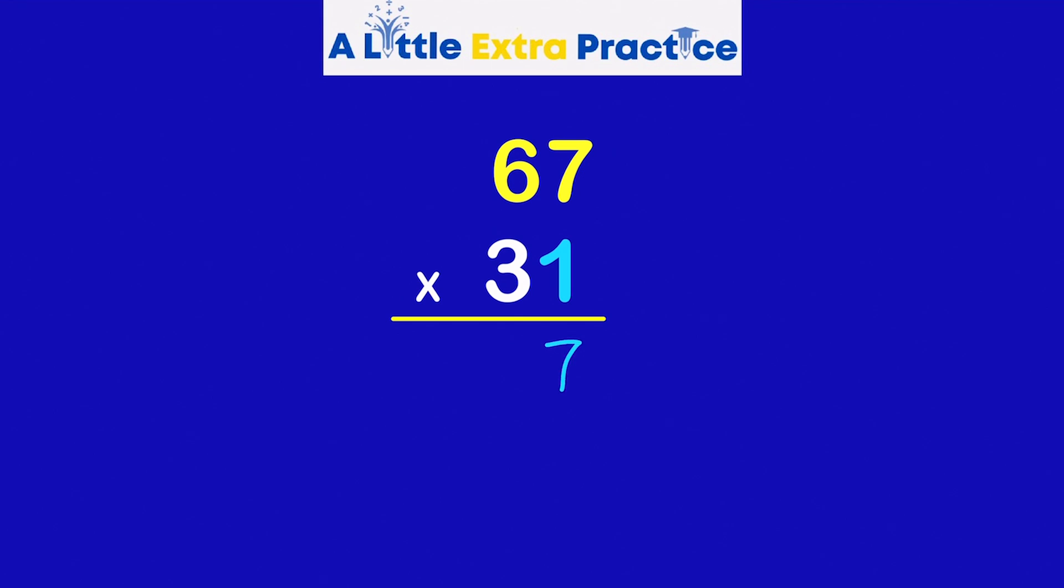1 times 7 is 7. 1 times 6 is 6. And this is going to be the first of the partial products.